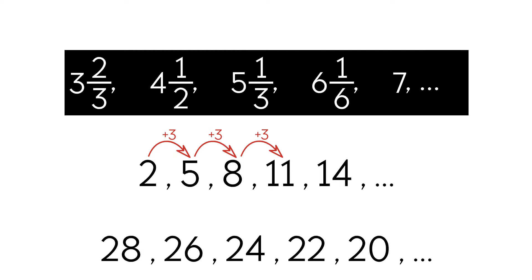Now let's take a look at another sequence. Unlike the previous sequence, this sequence is decreasing — the numbers get smaller. To find the rule, we take a look at two consecutive numbers. We subtract the smaller number from the larger number, and we see that the rule is to subtract 2.